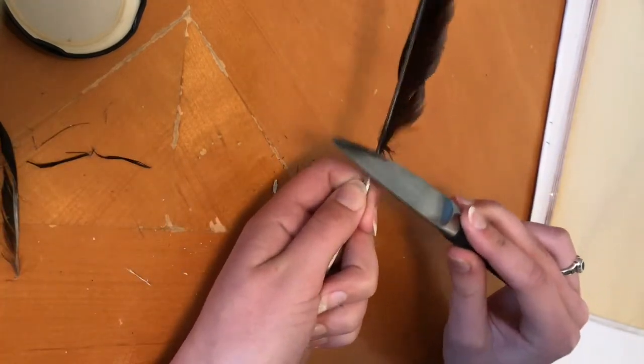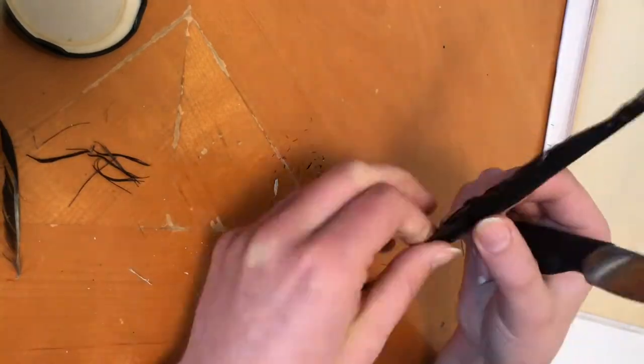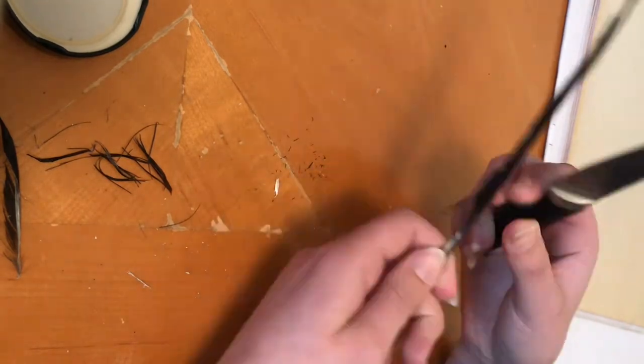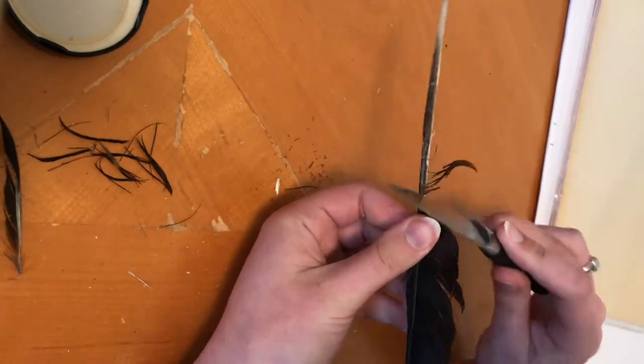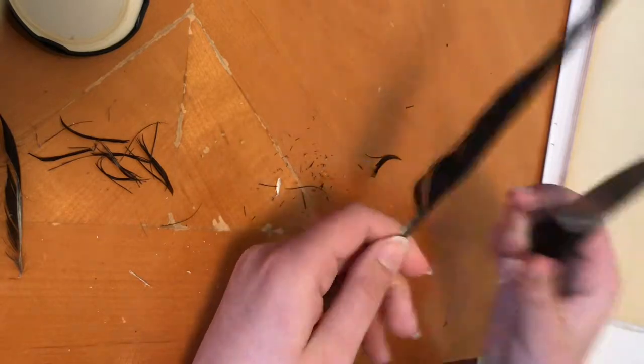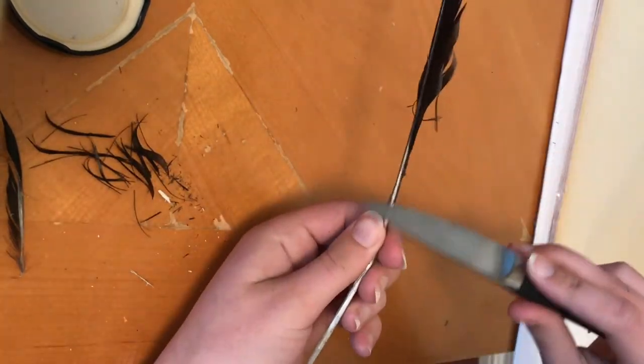I started with a long feather, and then removed barbs from the shaft until it was comfortable to hold. Some ancient quills had all the barbs removed and the skinny end of the shaft cut off, but I chose to keep them for the aesthetic.